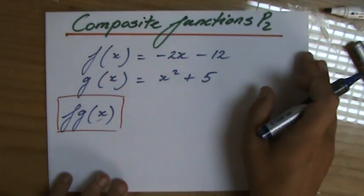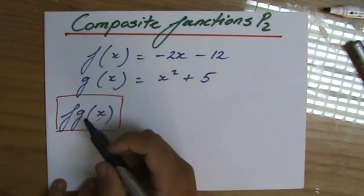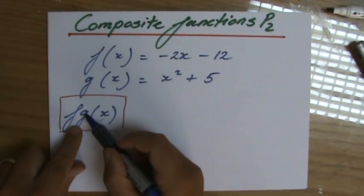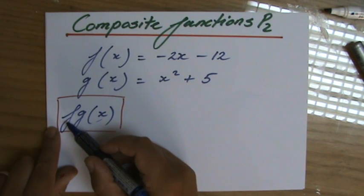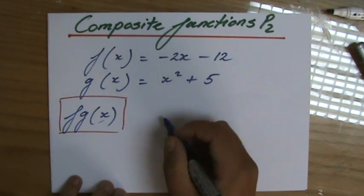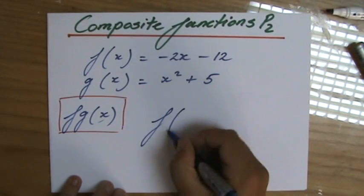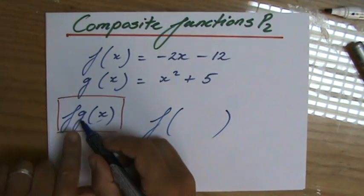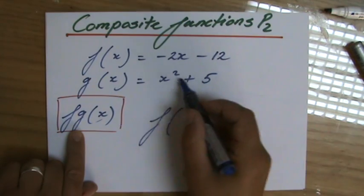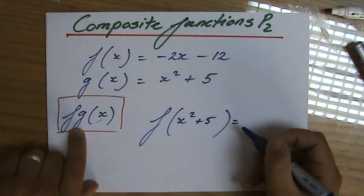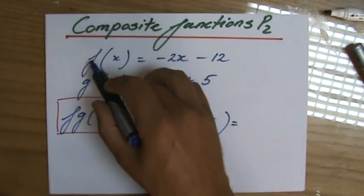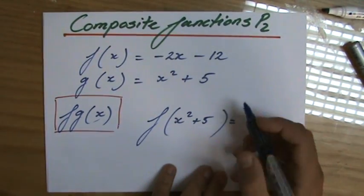Now, what does it mean? That's what we noticed in the previous video, is that I have to plug in g, the function g, into f for x. I start with f, and rather than x, I have now put in the function g. Now, what is the function g? It is x squared plus 5, so I'm going to evaluate my function f for x squared plus 5.